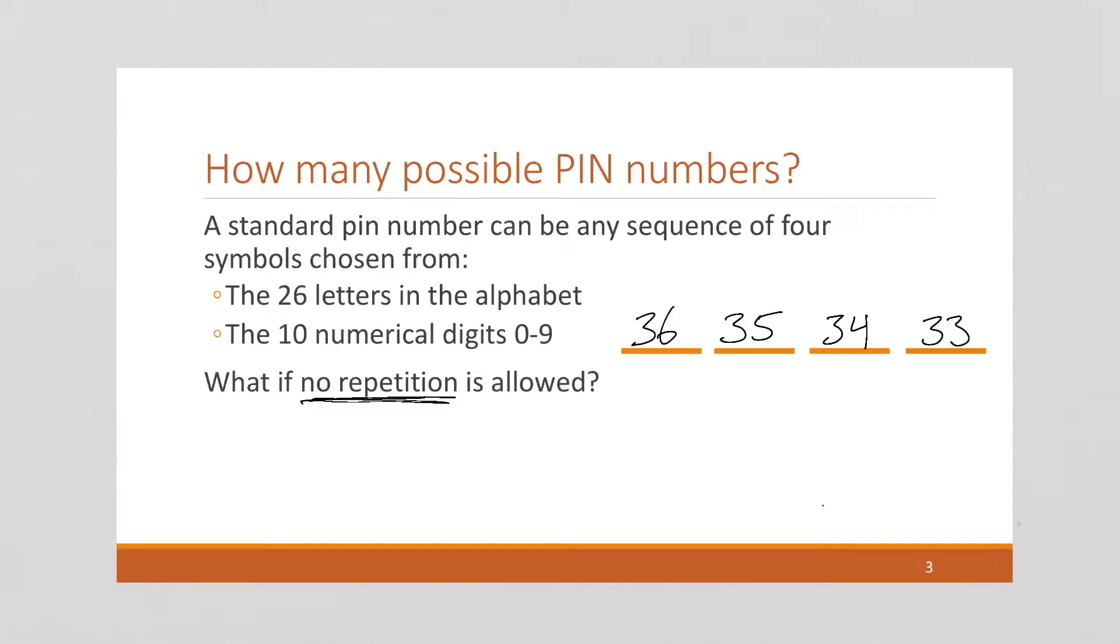So this still follows, and we can still use the multiplication rule. So this is 36 times 35 times 34 times 33, and again, if you get your calculator out, you'll find that this is 1,413,720 possible pin numbers. And this is without repetition.